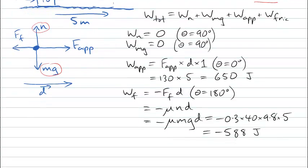So now we have the work done by each of the four forces. So we can now calculate the total work that's being done on the box. 0 work by the normal force, 0 work by the weight force, 650 joules by the applied force, minus 588 joules by the friction force, and that all combines to give us a total work of 62 joules done on the box.